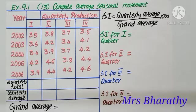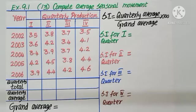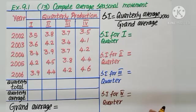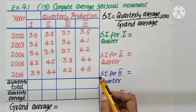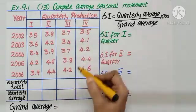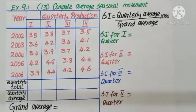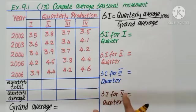Good morning children, in today's class we are going to do problems based on seasonal indices. The question will contain quarters or months. What we need to do, find the total of each quarter separately. This method we call simple average.